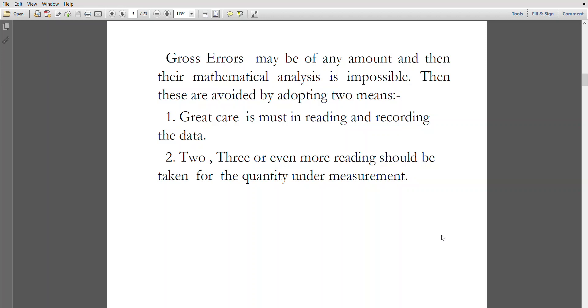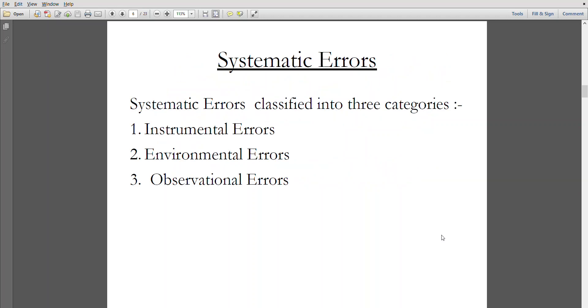Systematic errors can be classified into three categories: instrumental errors, environmental errors, and observational errors.